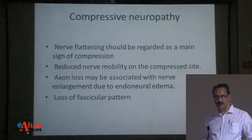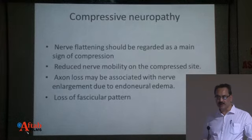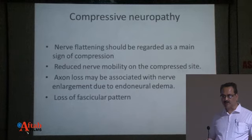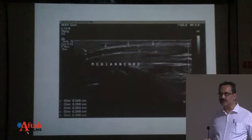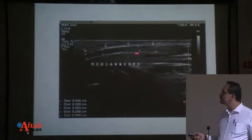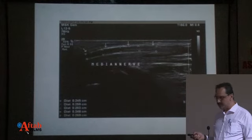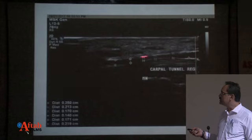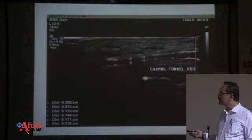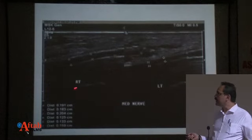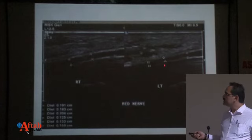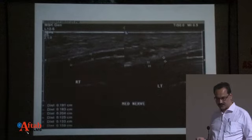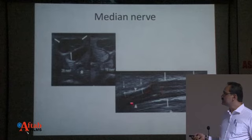Nerve flattening should be regarded as a main sign of compression. There will be reduced nerve mobility on the compressed side. Axon loss may be associated with enlargement due to endoneural edema, and there will be loss of fascicular pattern subsequently — all diagnosable on ultrasound. The images show the median nerve with measurements at the compression site, proximal dilatation, and a normal distal segment. Comparison with the opposite side is always possible — the right side is normal while the left shows compression, with an area of more than 10 square millimeters.